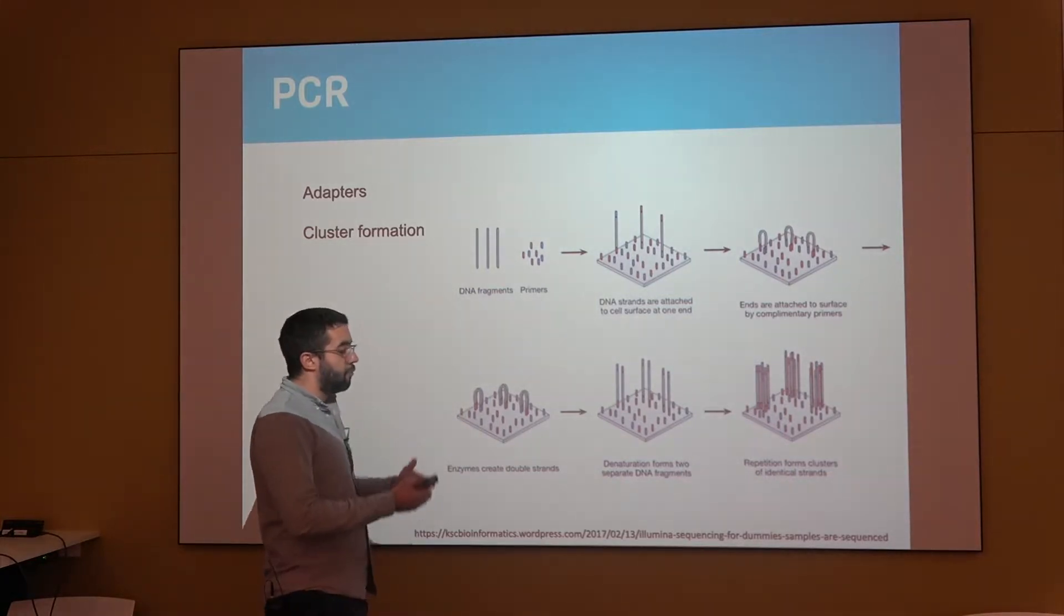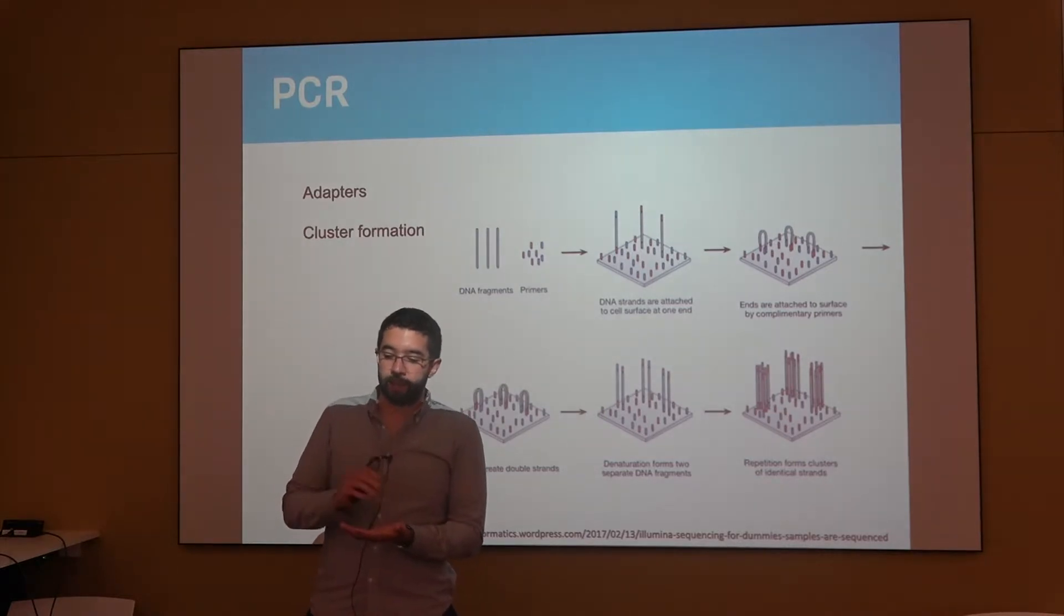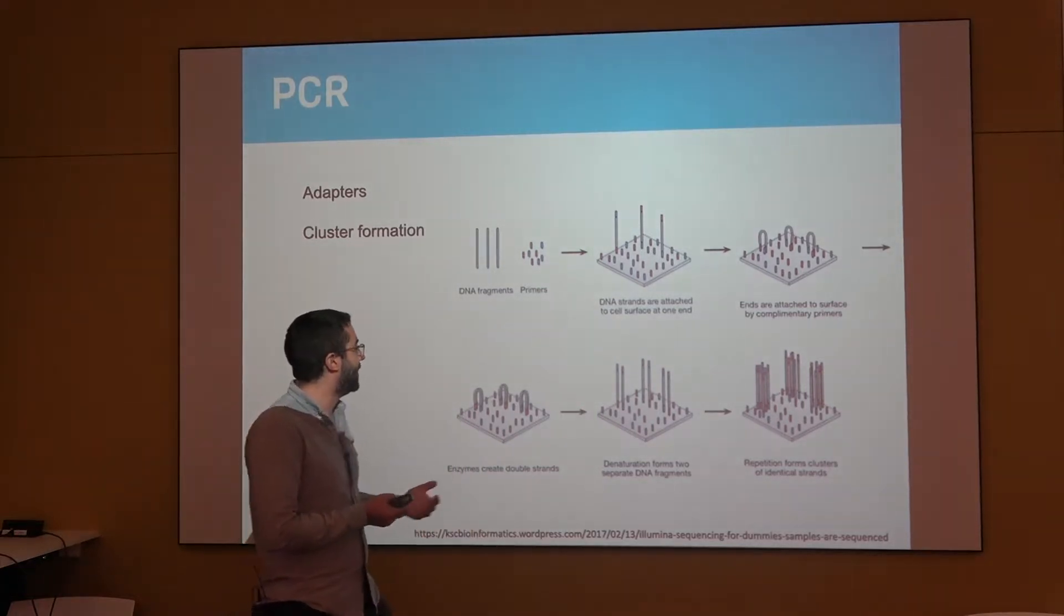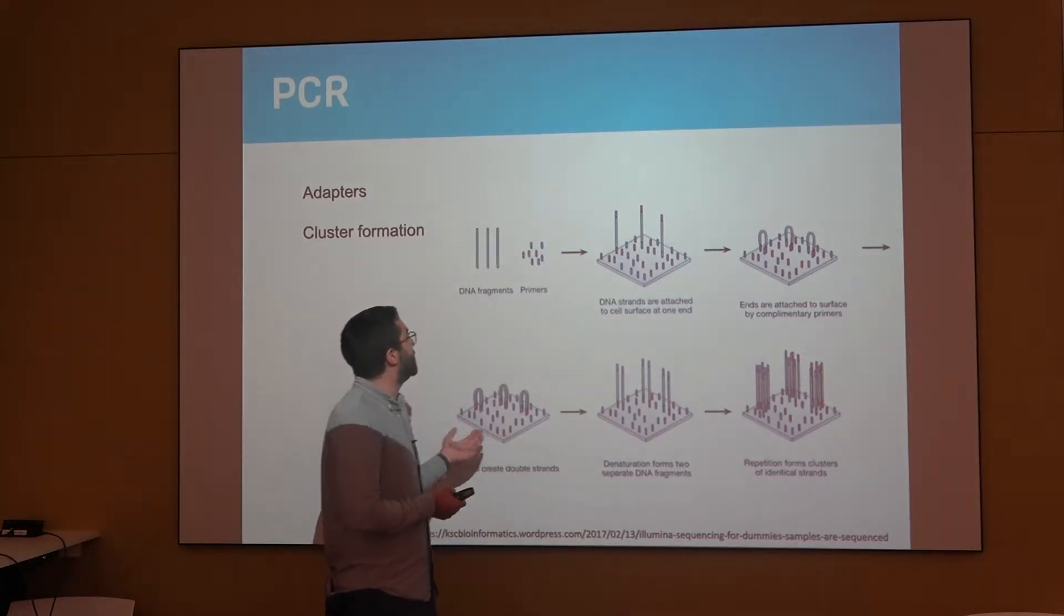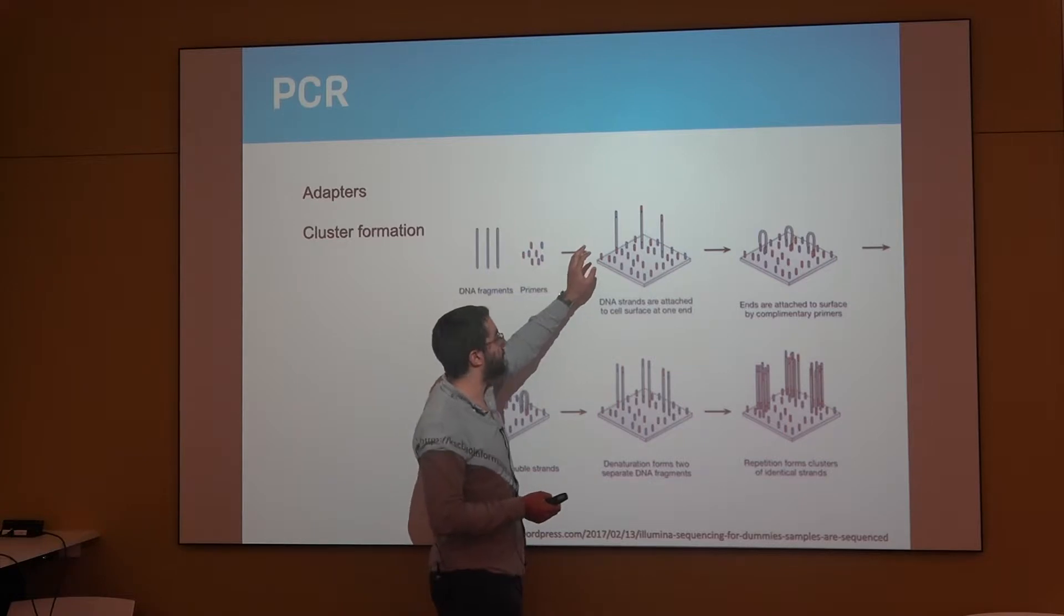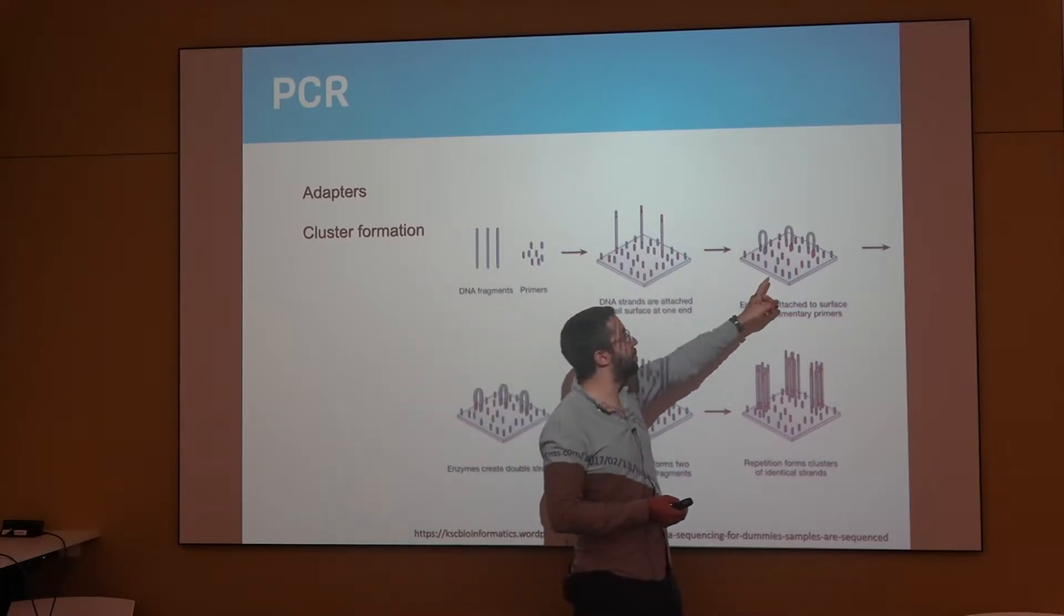So if we have these fragments of DNA attached to a surface and we want to amplify them, the PCR in this case has to happen on the surface. So the way this happens is you have the original DNA with your adapters, you put them together, you let them attach to the surface, and then PCR can happen in a bridge.